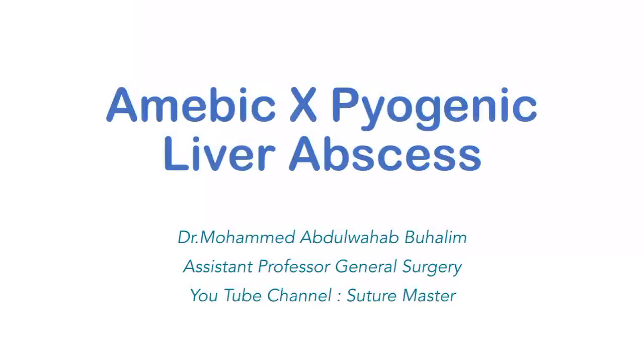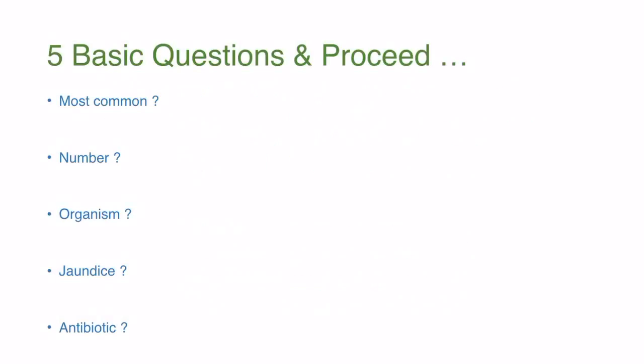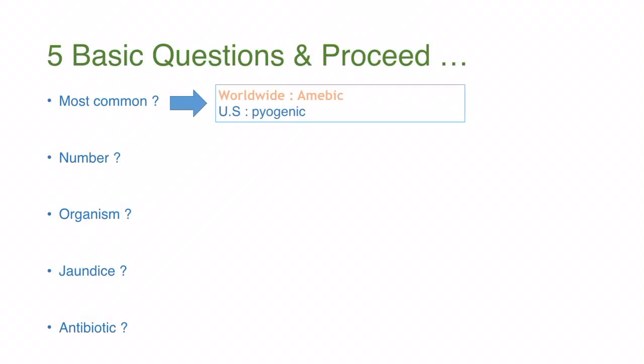Now back to our main topic — the amoebic and the pyogenic liver abscesses. I've made five basic questions to assess whether you have a good background on these. The first question: which type of liver abscess is the most common? The amoebic is the most common type worldwide, but in the United States it is the pyogenic.